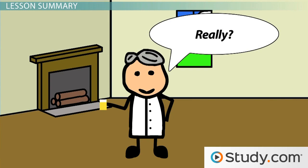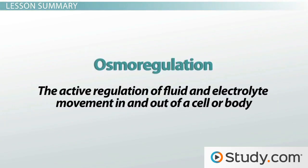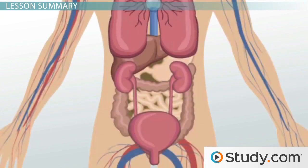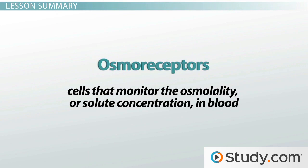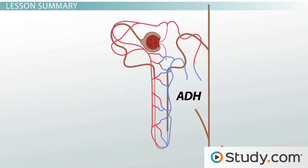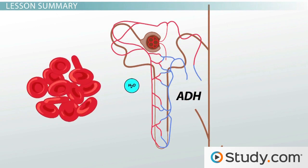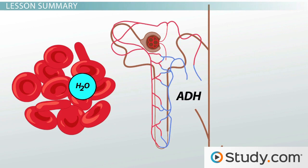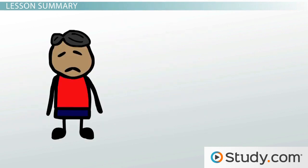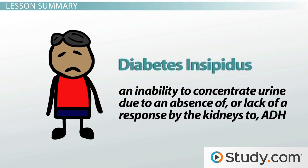Let's review everything one more time. The active regulation of fluid and electrolyte movement in and out of a cell or body is called osmoregulation, and is chiefly accomplished on a systemic or whole-body scale by the kidneys. If osmoreceptors sense an increase in the osmolality of your blood, ADH will be released to conserve more water in the body, so that the water can dilute the blood back down to a normal concentration. Unfortunately, some people have a condition called diabetes insipidus, whereupon they have an inability to concentrate urine due to an absence of, or lack of a response by the kidneys to, ADH.